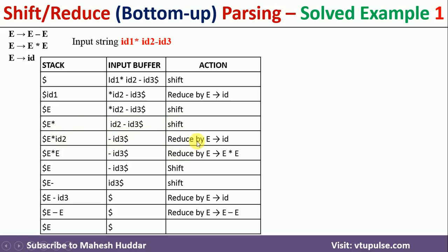The remaining input buffer content is minus, id3. The identifier id2 can be reduced to e, so we perform reduce by e → id. Now the stack holds e * e, which can be reduced to e by the rule e → e * e. We perform that reduction. The input buffer still holds minus, id3. We then shift the minus onto the stack, giving e minus, and then shift id3 as well.